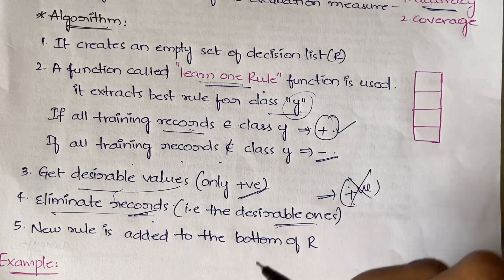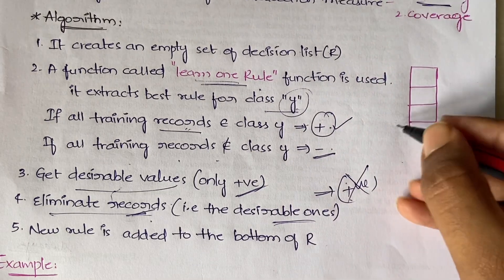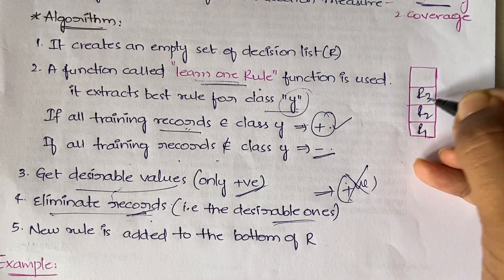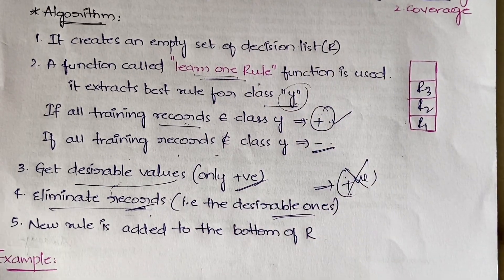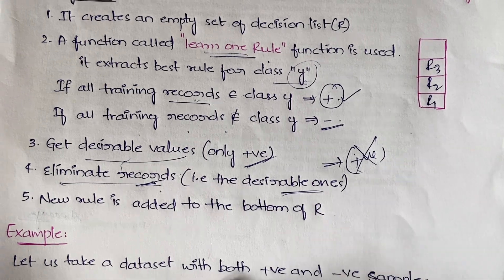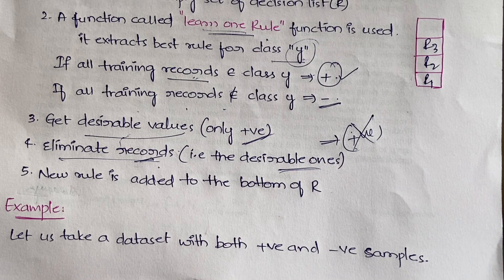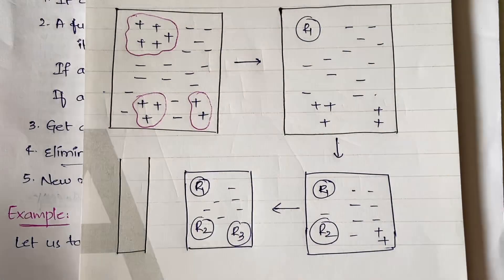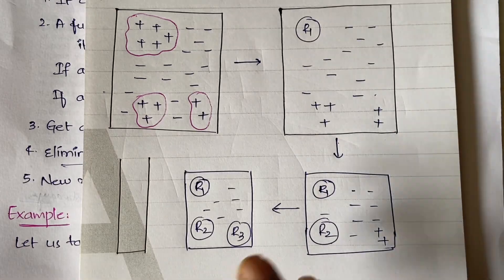Once records are eliminated, a new rule is added to the bottom of the rule list R. Then the same process repeats, adding R1, R2, R3, and so on. I'll explain this with an example using a dataset containing both positive and negative values — here is the diagrammatic representation.